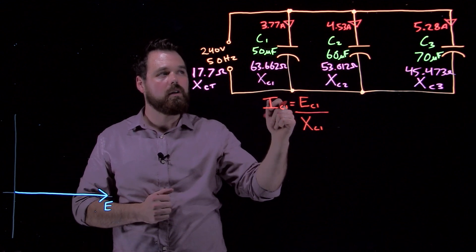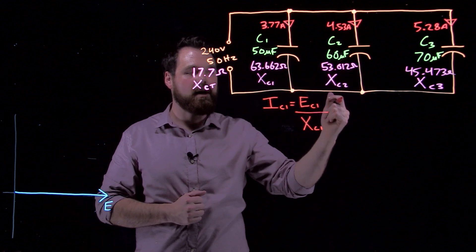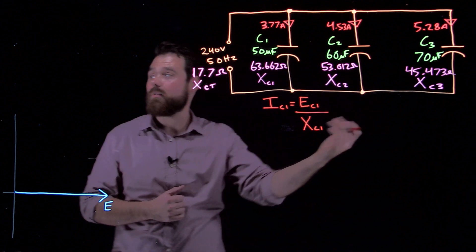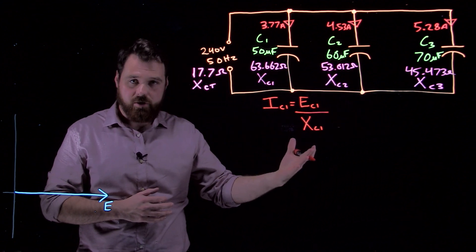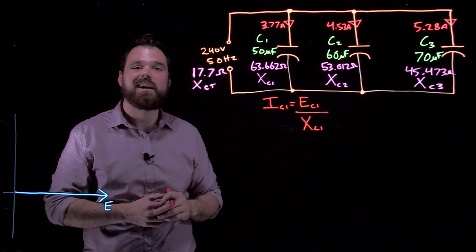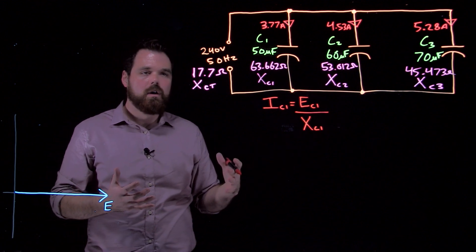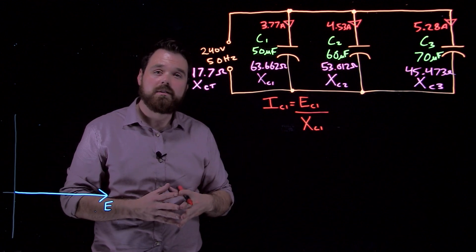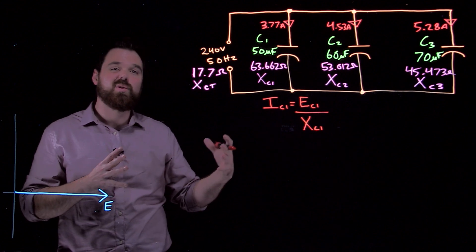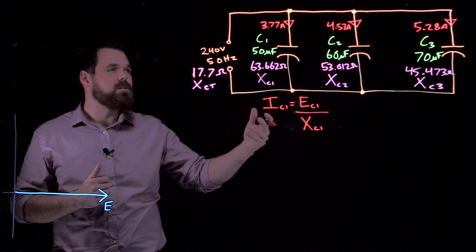The same for capacitor two, only now it would be current for capacitor two, voltage across capacitor two divided by XC2. We can do a few things now if we're looking for the total current. But before we do that, each of these currents flowing through the branches...